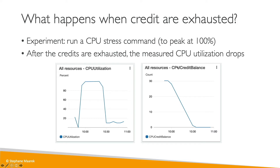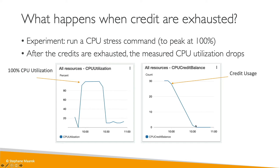On the right-hand side, we can look at the CPU credit balance. It started at 30, which is the number of credits you get when you launch a T2 micro. Because CPU utilization was at 100%, the credit balance was being consumed. Over time the CPU credit balance drops continuously, which allowed utilization to still peak. But when the CPU credit balance reached zero with no more credits, even though the stress command was still running, the CPU utilization dropped all the way to 10%, which is the baseline.